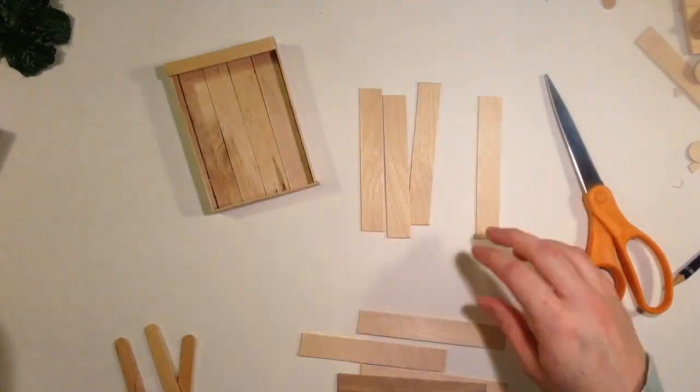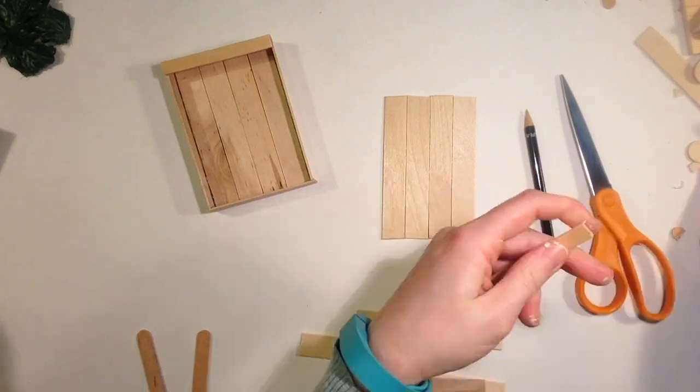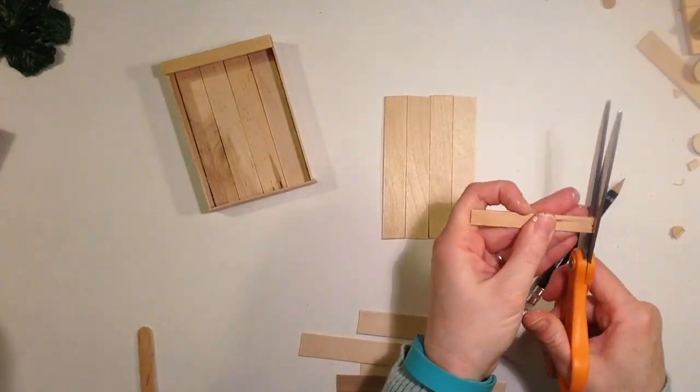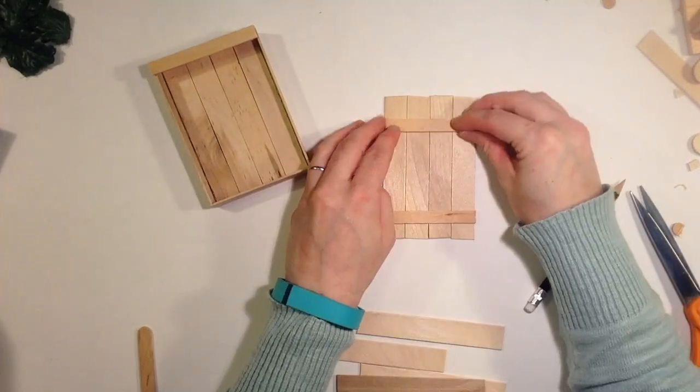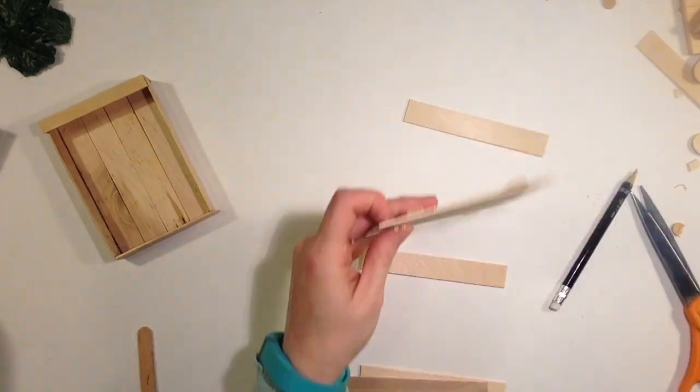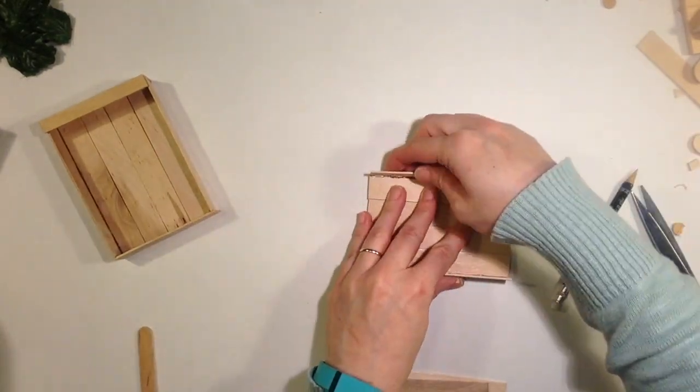Now I have four sticks for the bottom and two for the sides. I'm going to cut one regular stick the width of these four jumbo sticks lined up. I'm going to cut two of those and glue them to hold the bottom together. Those other two I previously cut will go on the sides.